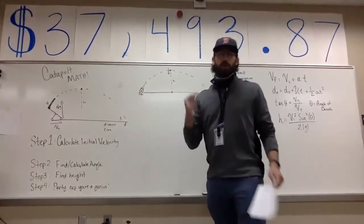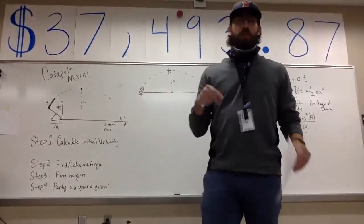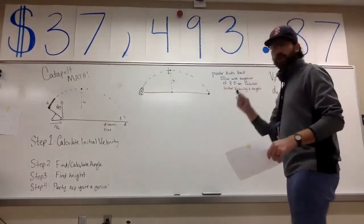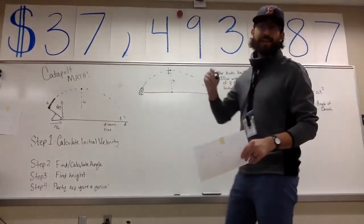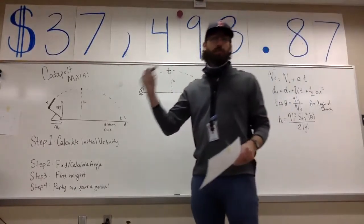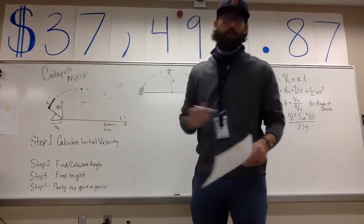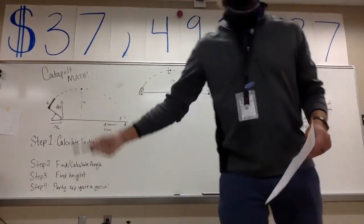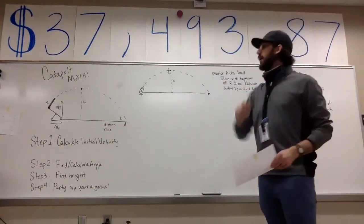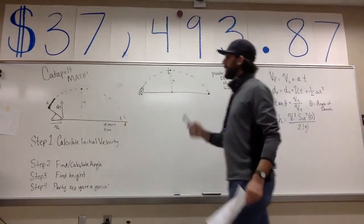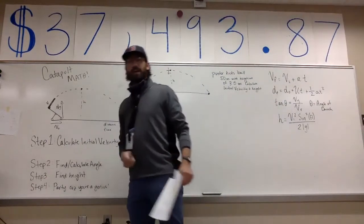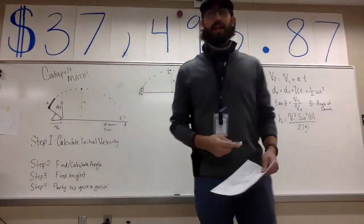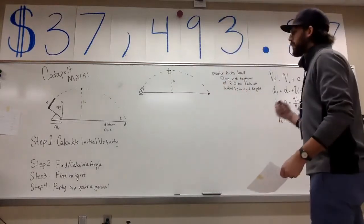All right, what's up party people, welcome back to another edition of Mr. Tate Teaches. What we're talking about today is catapult math — the math behind a catapult. What happens whenever a projectile is being launched from an object such as a catapult, a trebuchet, anything like that? What is the physics behind it?